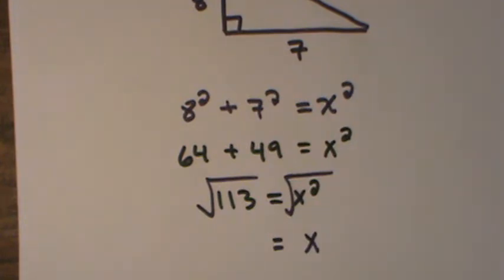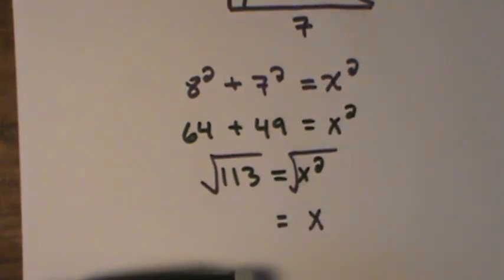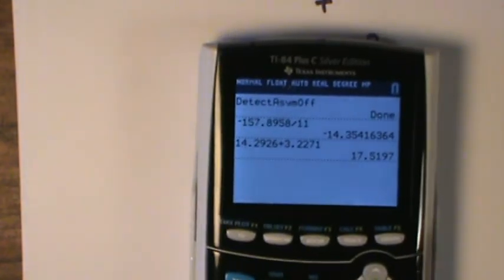If I wanted an exact answer, I'd leave this as √113 or square root 113. If I want a decimal approximation, I can go to my calculator and find the square root of 113.